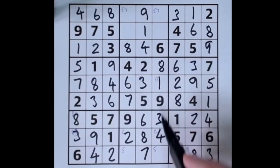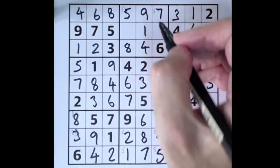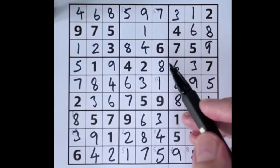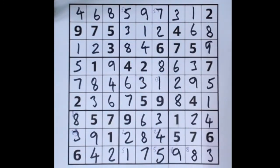Now when we take the 1 down here, that has to be 1, that has to be 5, our last remaining number. 5 up here, 5, 7. Two numbers are missing, 2 and 3. 3 here blocks that, so that's our 3, that's our 2.